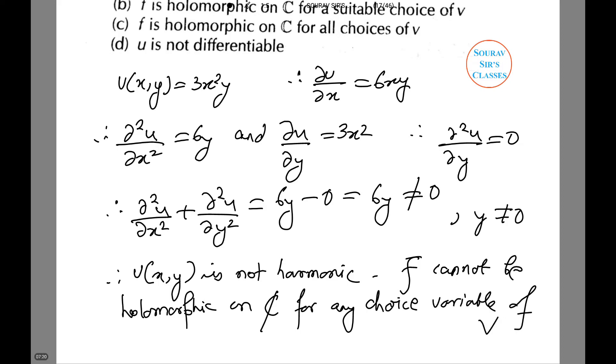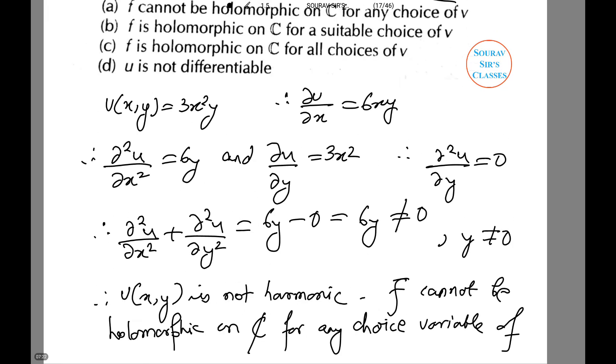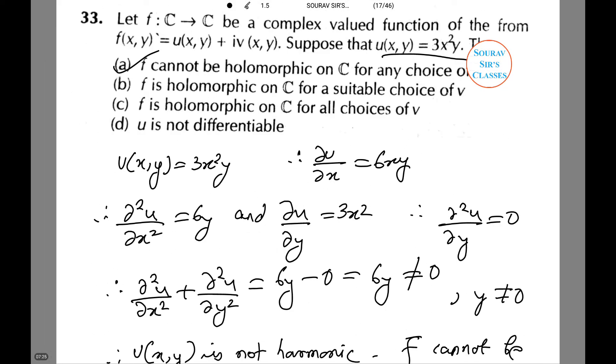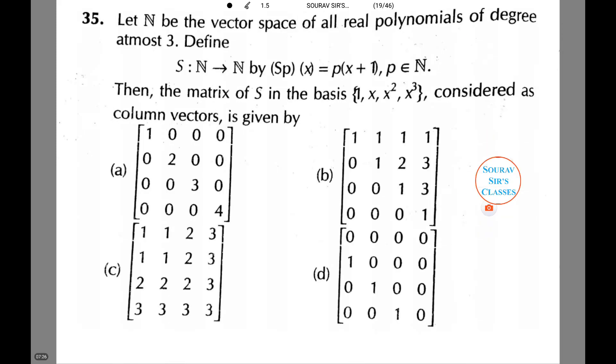Therefore, u(x,y) is not harmonic. So f cannot be holomorphic on ℂ for any choice of v. Hence, option A is the correct option.